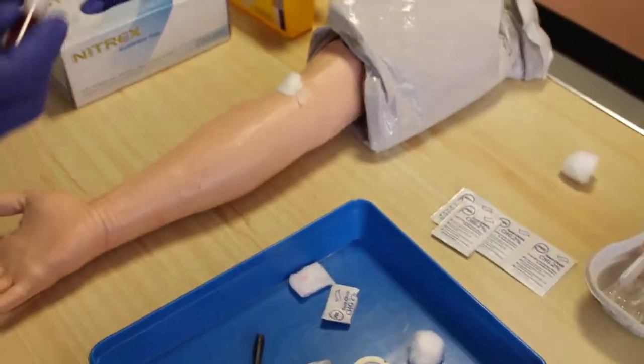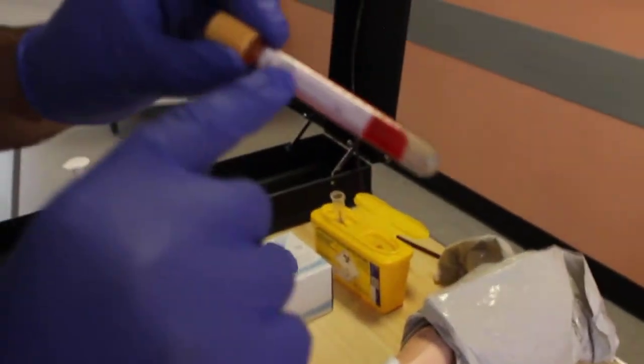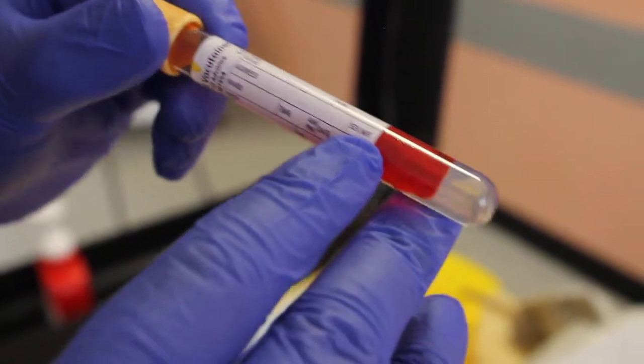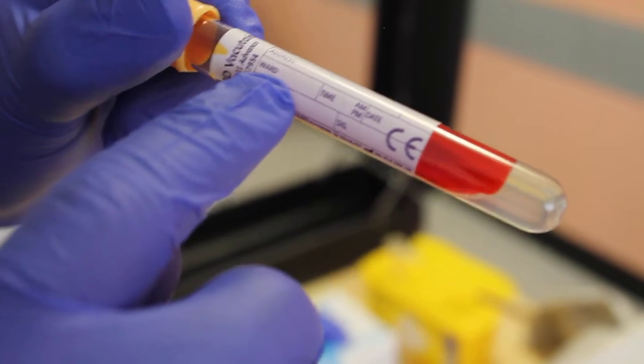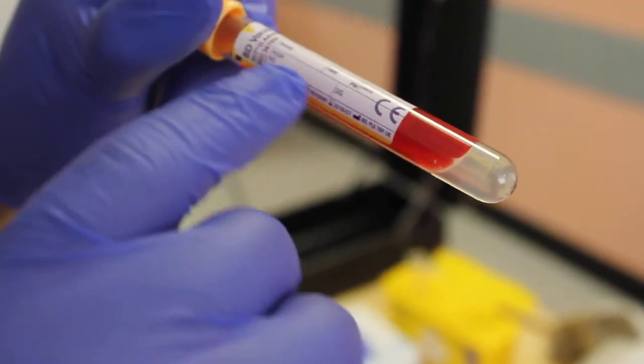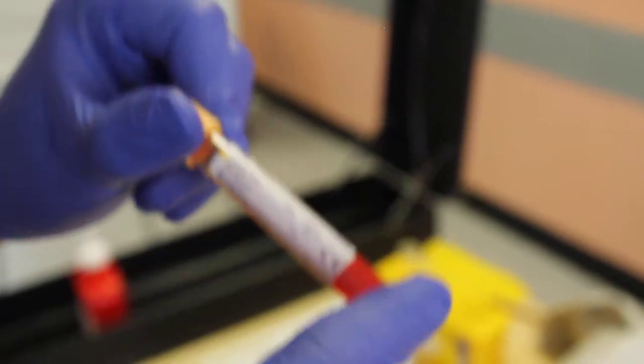After this, you need to label your bottle with the surname, forename, date of birth, address, whether they're male or female, which ward they're in, the time and date you've taken it, the hospital number, and sign the tube.